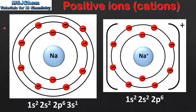We'll start by looking at positive ions, which are also known as cations. On the left we have a sodium atom which has the electron configuration 1s2, 2s2, 2p6, 3s1. The sodium atom can lose the one electron in the 3s sublevel to form a sodium ion, which we can see on the right. The electron configuration of the ion is 1s2, 2s2, 2p6.